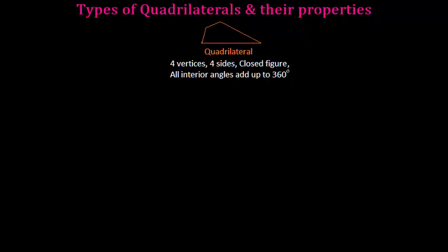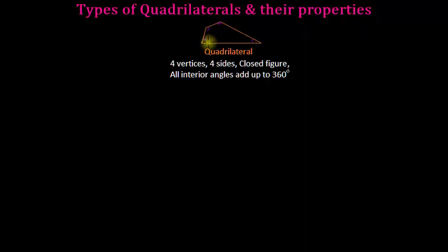In this video we are going to learn different types of quadrilaterals, their properties, and how one quadrilateral inherits properties from another. A quadrilateral is a closed figure with four vertices and four sides, and all its interior angles add up to 360 degrees. We will change criteria one by one and see how we can get different types of quadrilaterals.